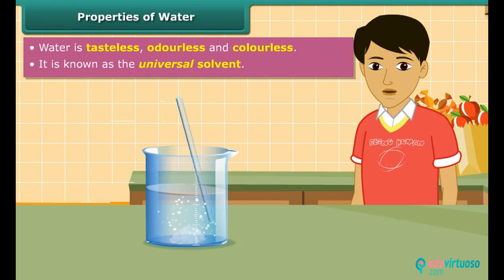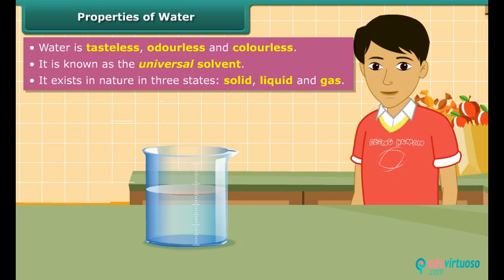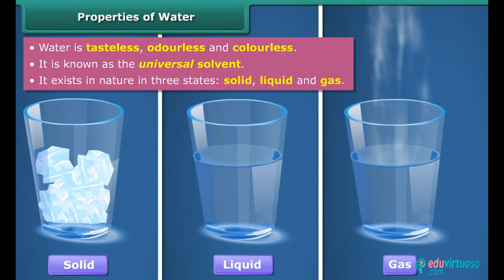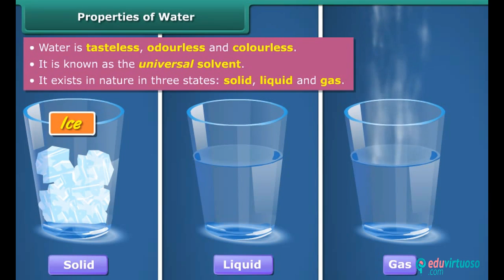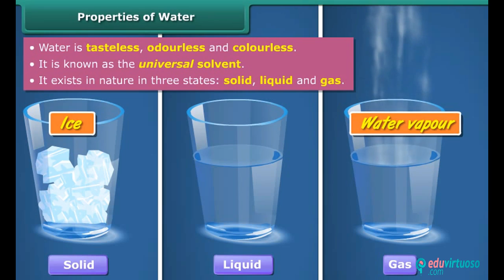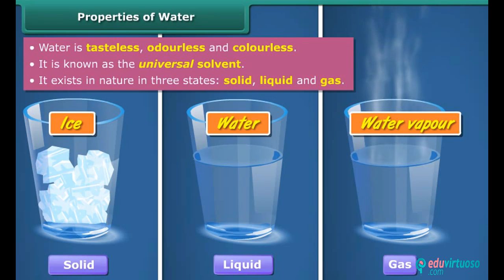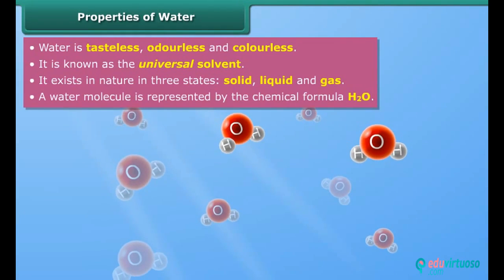Water is tasteless, odorless and colorless. It dissolves many substances, so it is known as the universal solvent. It exists in nature in three states: solid, liquid and gas. In solid form, water is known as ice or snow. In gaseous form, water is known as water vapor or steam. But the most common form that water takes is the liquid form, and it is in this form that it is simply known as water.